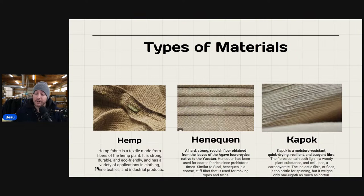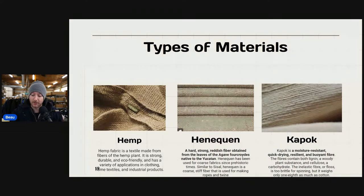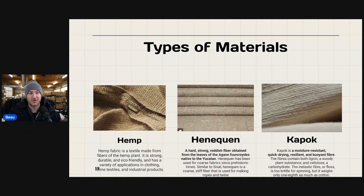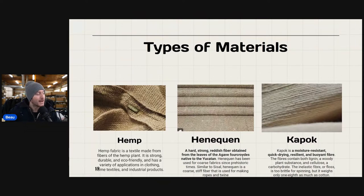Kapok is a moisture-resistant, quick-drying, resilient, buoyant fiber. The fibers contain both lignin and cellulose. The inelastic floss is too brittle for spinning but weighs only one-eighth as much as cotton. That would be a first for me. If you find kapok out there, do some research — you may have something pretty valuable. You're probably going to see a lot of these fibers coming from Europe or Asia, not produced in the USA.